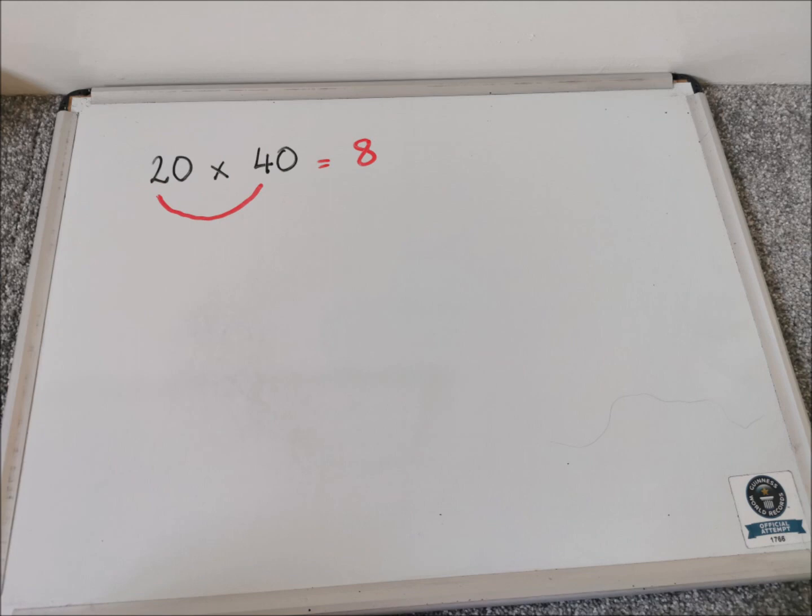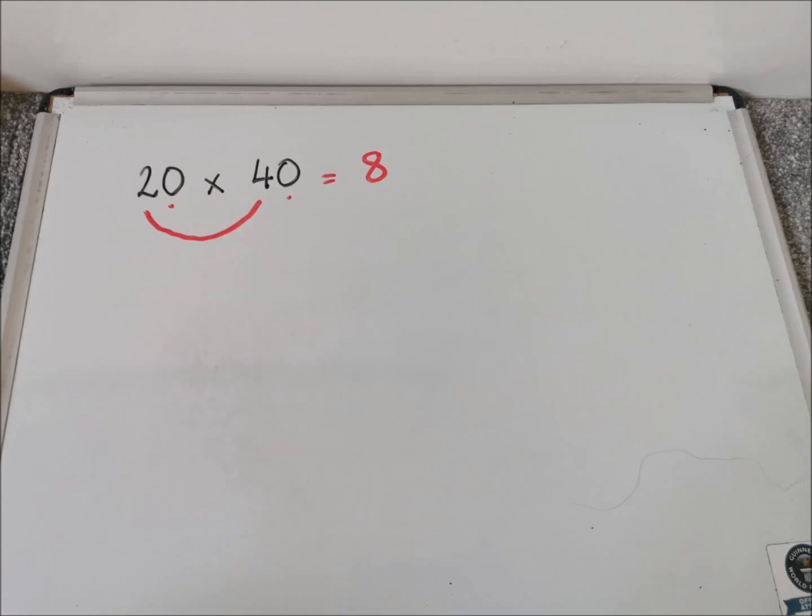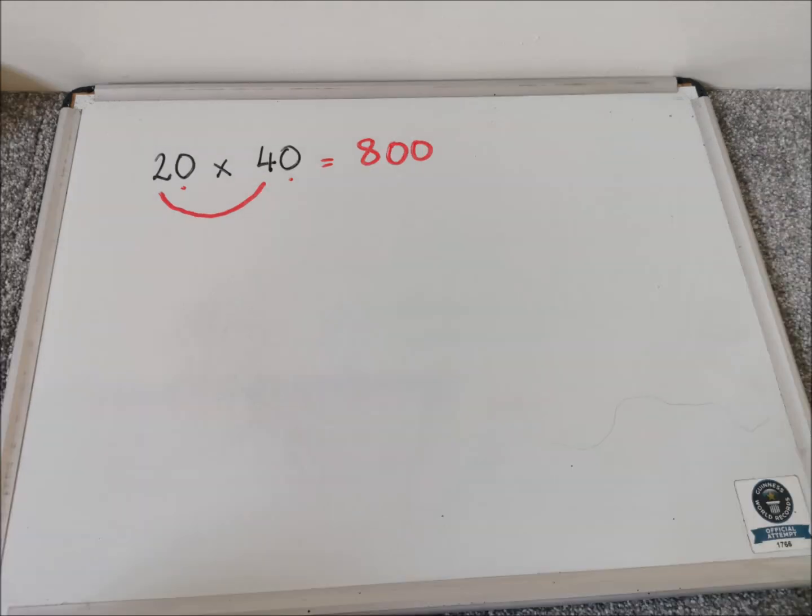I then need to count the number of zeros. So I do dots underneath the zeros just to keep myself right. So I've got two dots. So I add the two zeros into my answer. So my answer is 800.